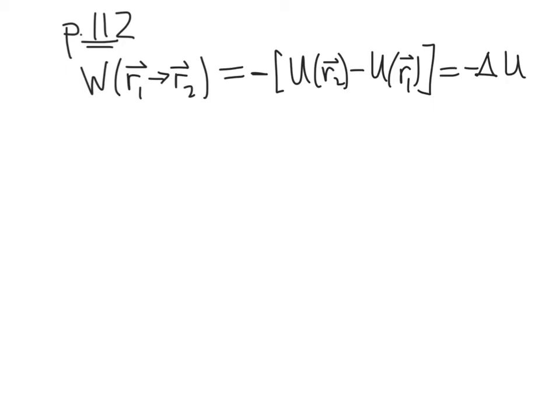If you recall from page 112 in section 4.2, we had this relationship between the work done in moving from position R1 to R2, and it's related in the case of a conservative force to the difference between the potentials at those two points, and that is the difference, the exact difference between, the exact difference in the potential energy function.